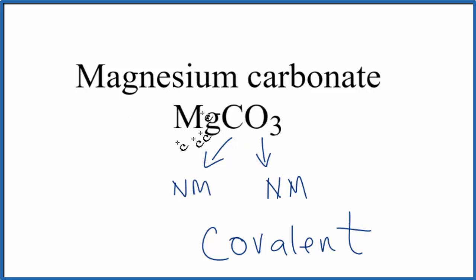So overall, we have our positive magnesium and then our carbonate, which is negative. That's ionic. But within the carbonate ion, CO3 2 minus, within that carbonate ion, we have covalent bonds.